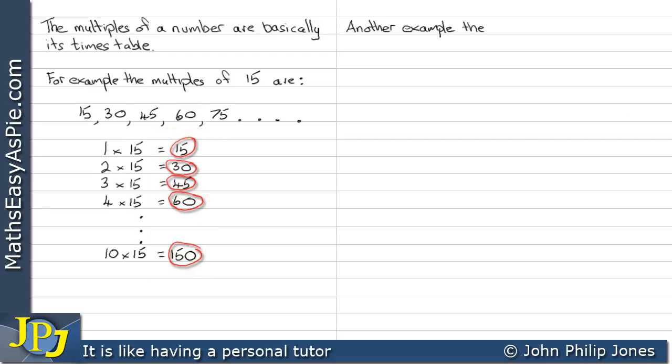Another example. Here we're going to choose multiples of 6, and they are 6, 12, 18, 24, 30, 36, and so on,